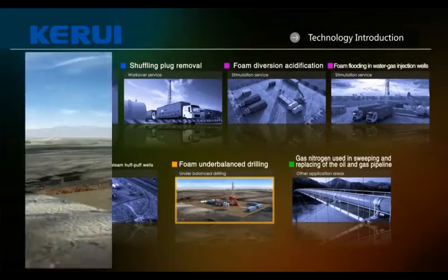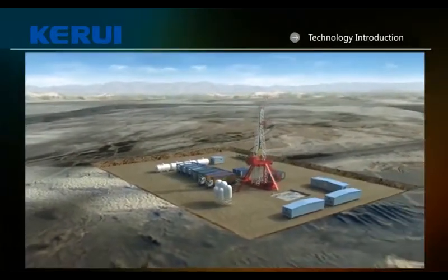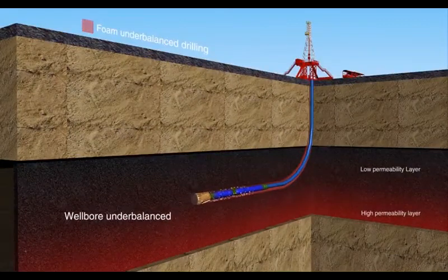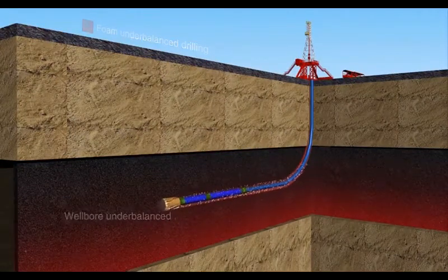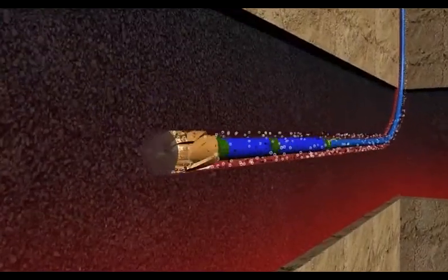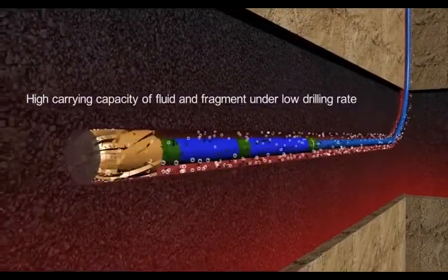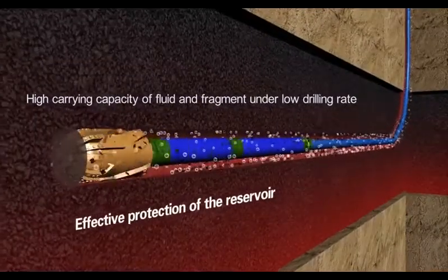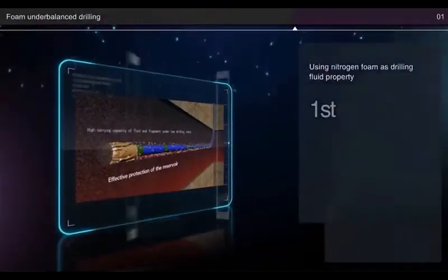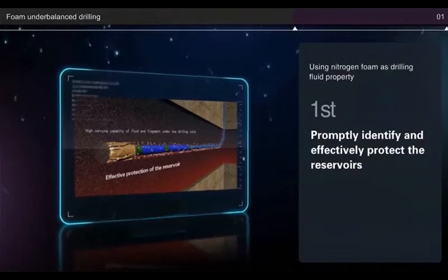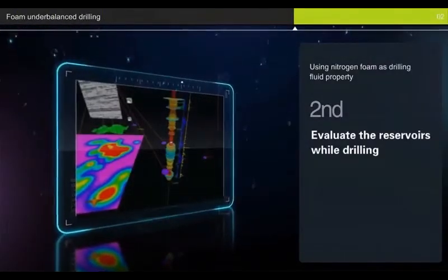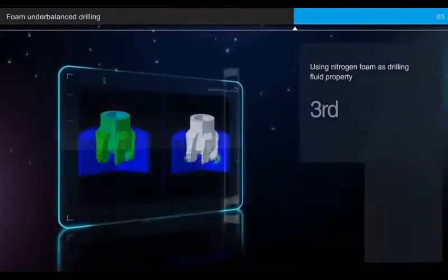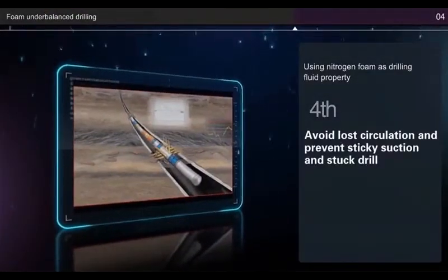Foam underbalanced drilling makes it easy to adjust the gas-liquid ratio and achieve underbalance. The foam's carrying properties are good; in conditions of low-speed drilling fluid circulation, the performance of liquid and cuttings carrying is good. Strengths include: (1) primarily identify and effectively protect the reservoirs; (2) evaluate the reservoirs while drilling; (3) improve ROP; (4) avoid lost circulation and prevent sticky suction and stuck drill; (5) improve exploration efficiency as a whole.